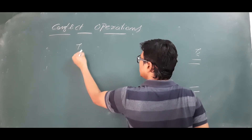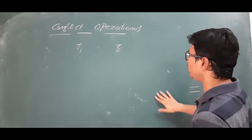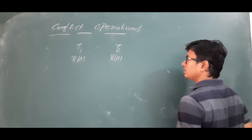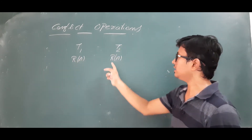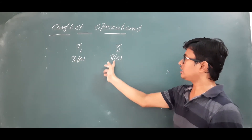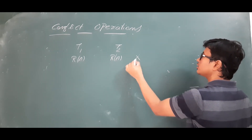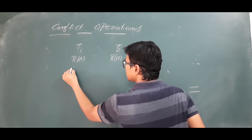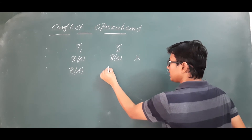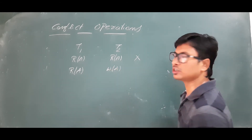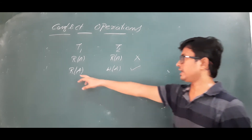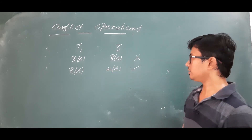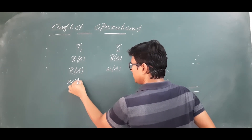Let's take transaction T1 and transaction T2. If T1 performs Read(A) and then T2 also performs Read(A), that is not a conflict operation — both transactions can read the same data item without any problem. However, if T1 performs Read(A) and then T2 performs Write(A), that is a conflict operation, because T1 is reading data item A while T2 is writing to the same data item A.